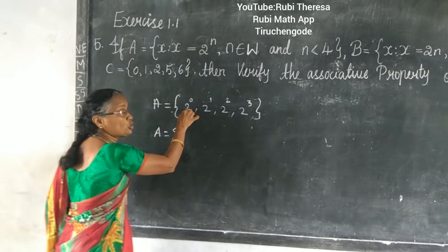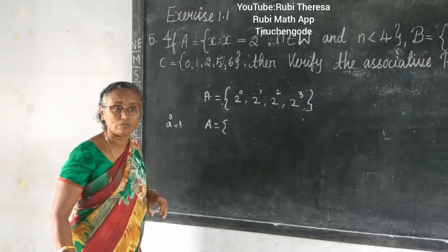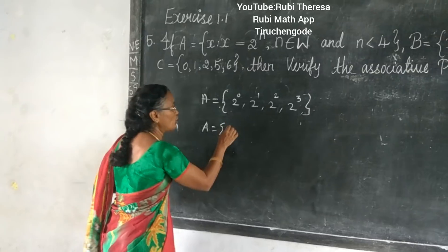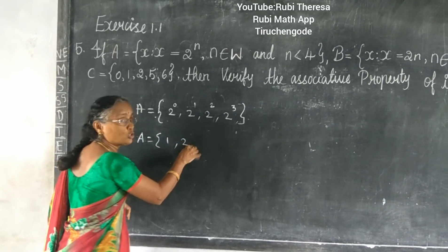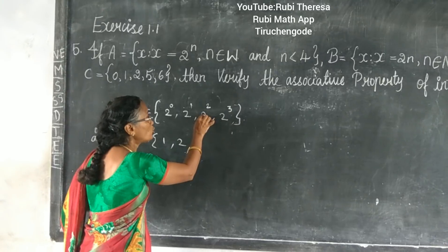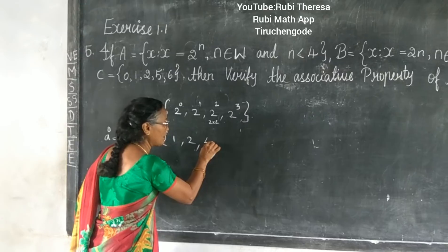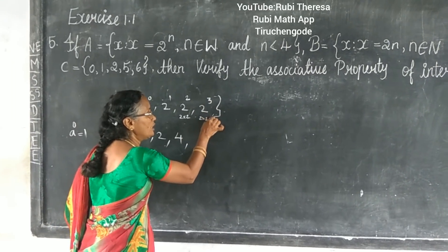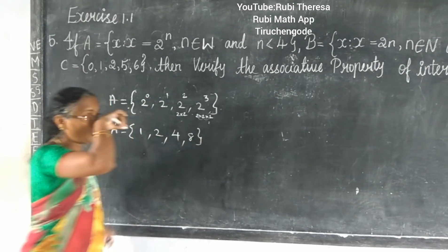So, A is equal to: 2 to the power of 0 equals 1. 2 to the power of 1 equals 2. It's in exponent or power form, so you want to expand. 2 squared means 2 into 2, so 2 2's are 4. 2 cubed means 2 into 2 into 2: 2 2's are 4, and 4 2's are 8. Now you've got A equal to {1, 2, 4, 8}.